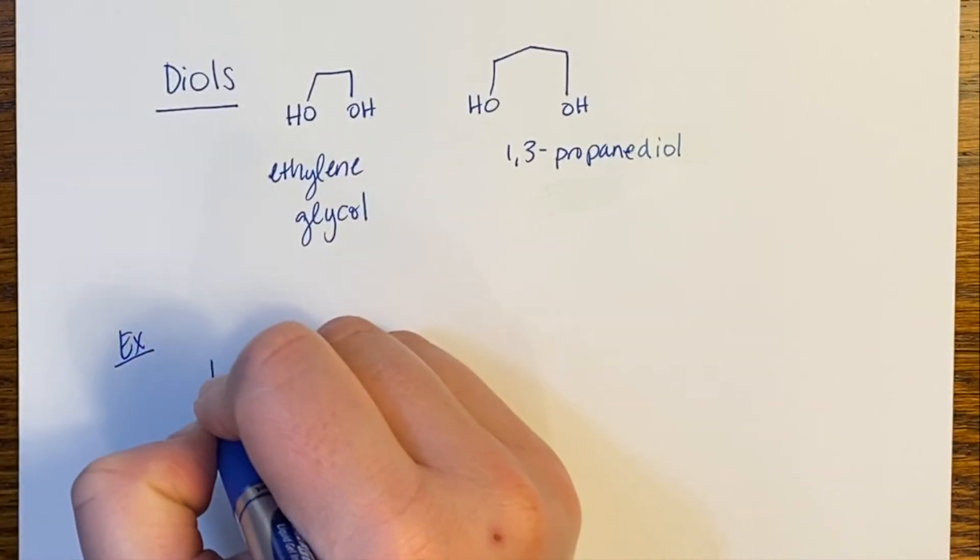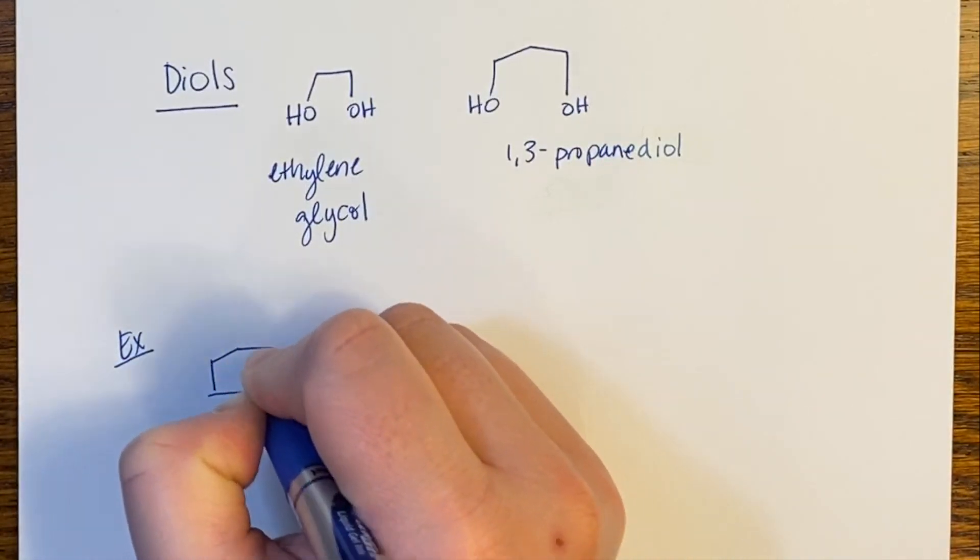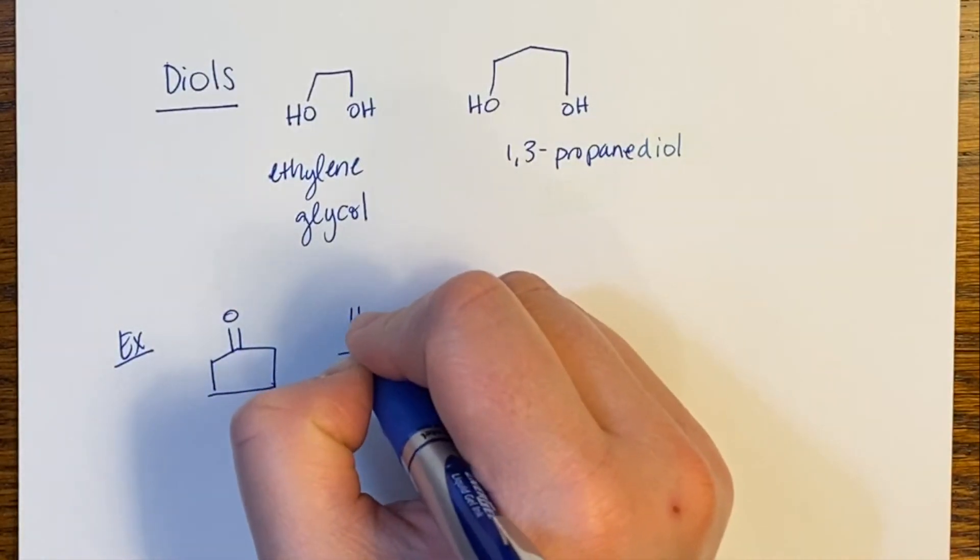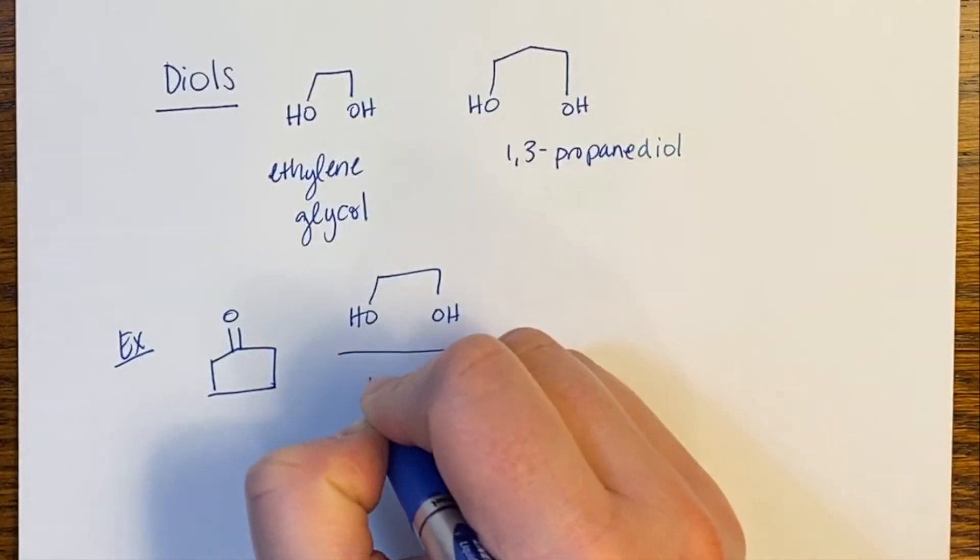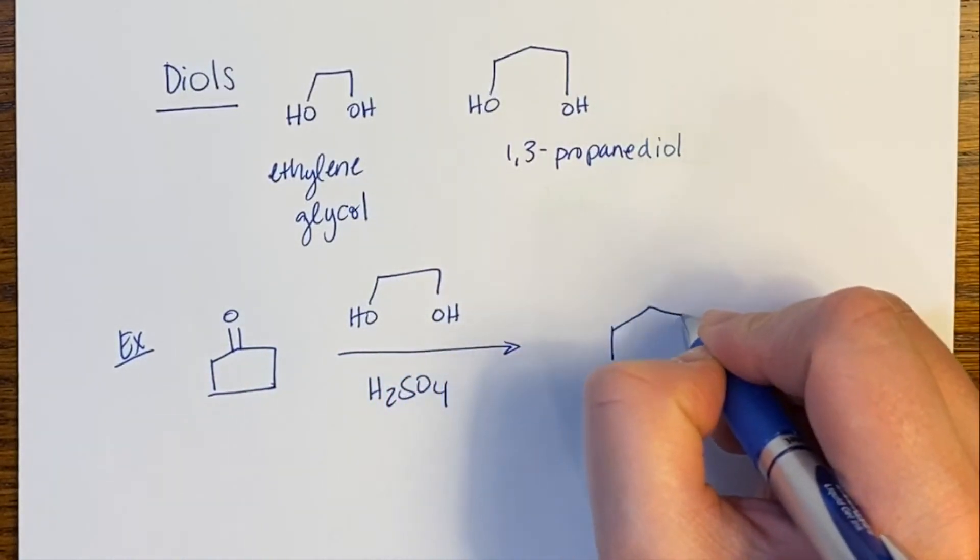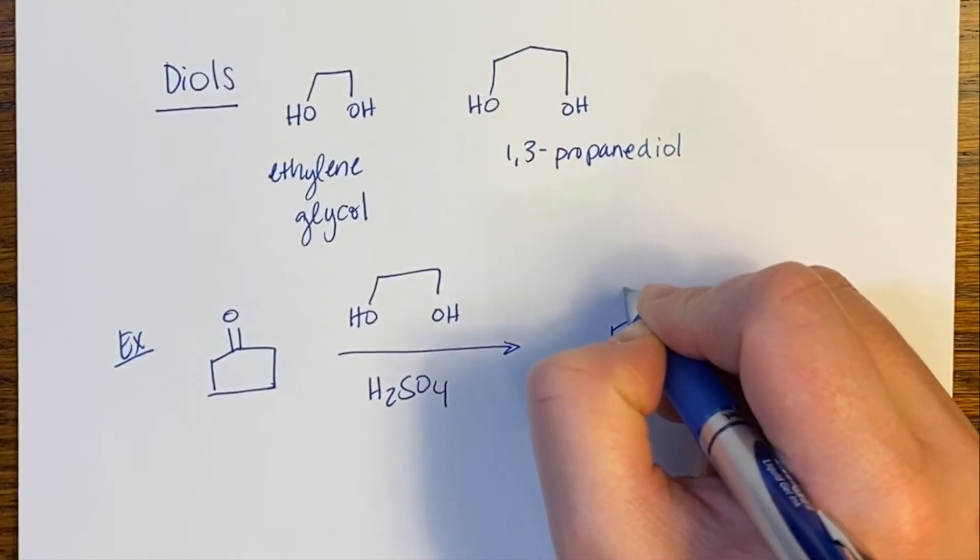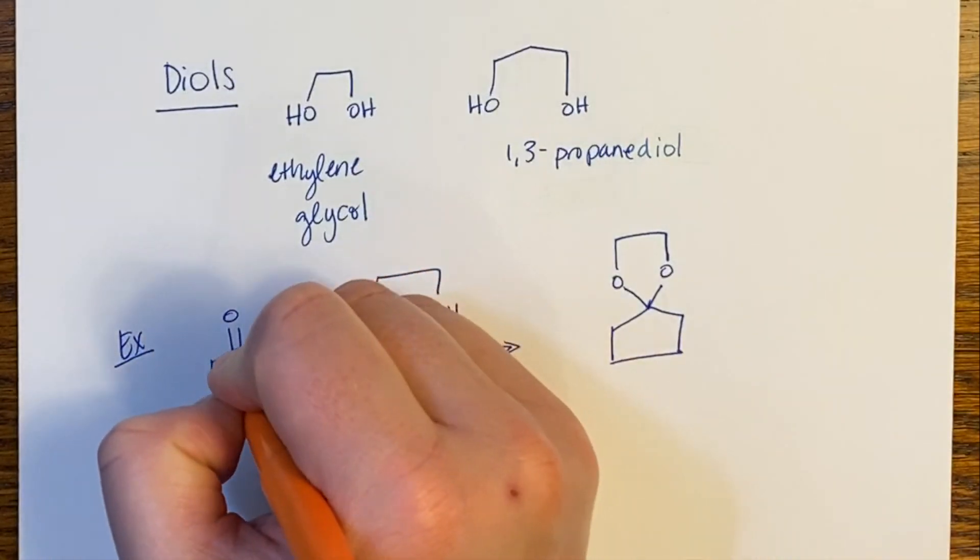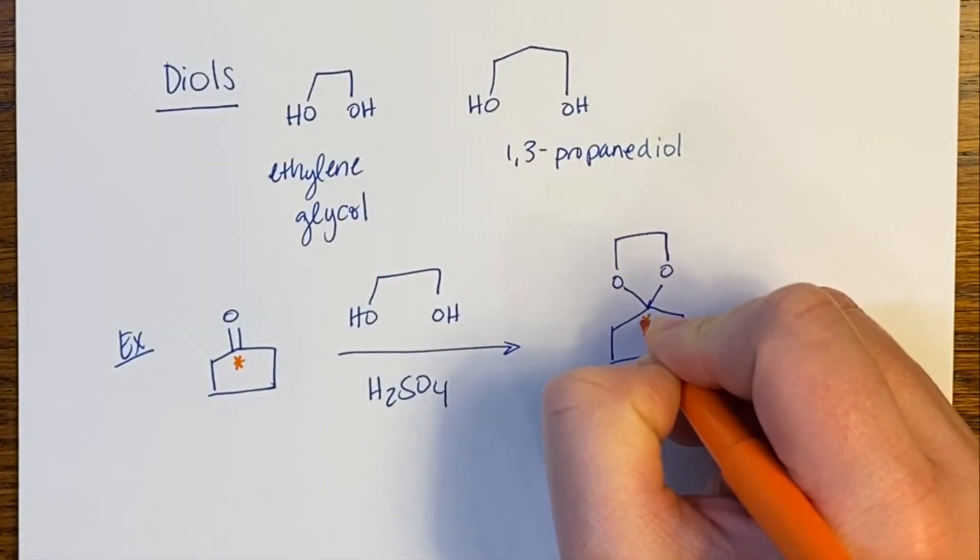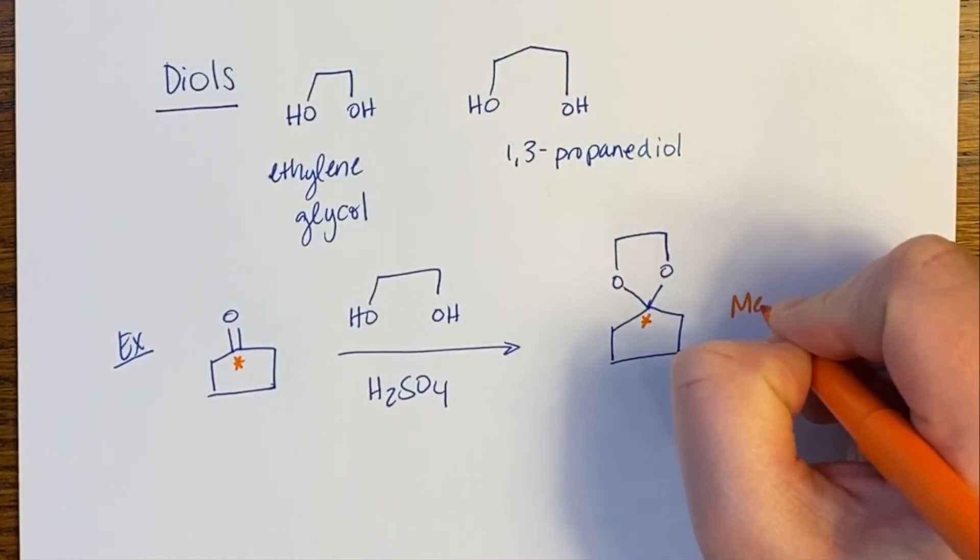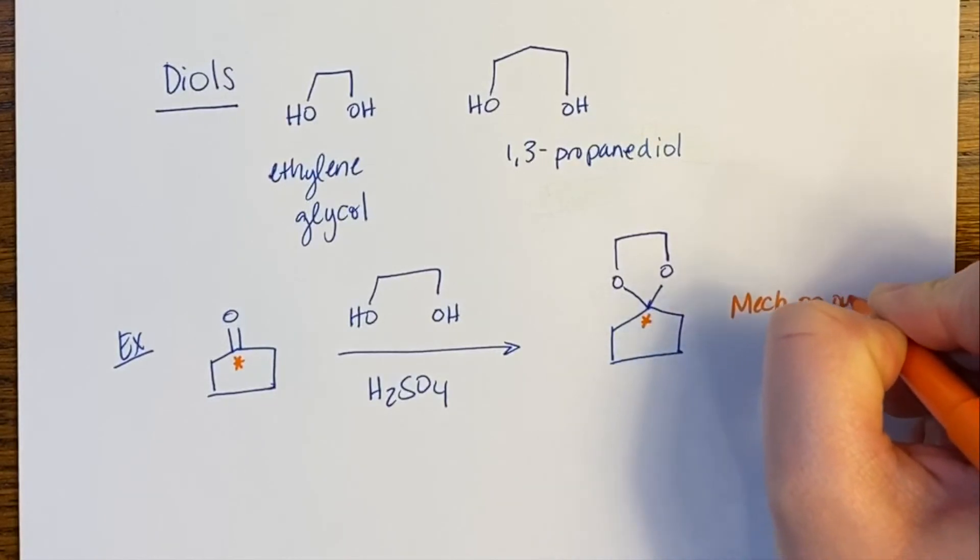So as an example, if I had a ketone like this one, I could treat this ketone with ethylene glycol in the presence of sulfuric acid. And the product that I would make out of that reaction is this one here. Where this is the carbon of the carbonyl. This is the carbon of the carbonyl there. That is the carbon where all of the chemistry happens. Make sure you can go through this mechanism on your own.